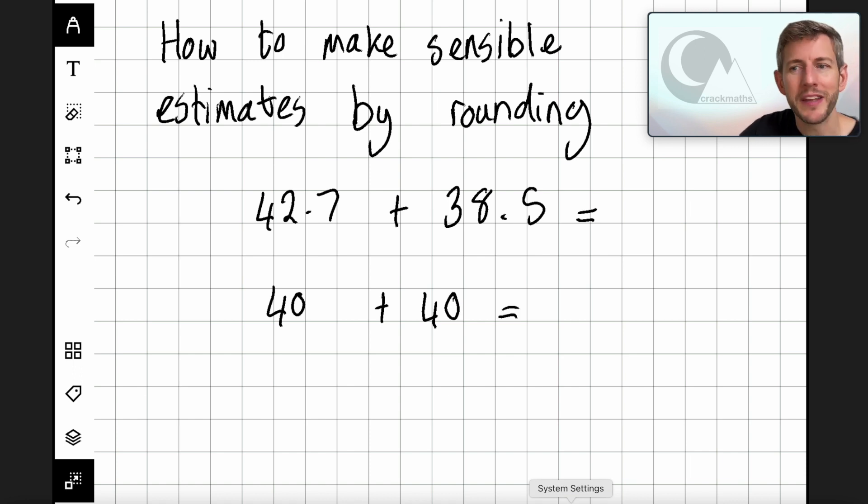So if I was going to estimate the answer to 42.7 plus 38.5, I would say it's going to be roughly 40 plus 40, which is equal to 80. So a sensible estimate for 42.7 plus 38.5 is 80.